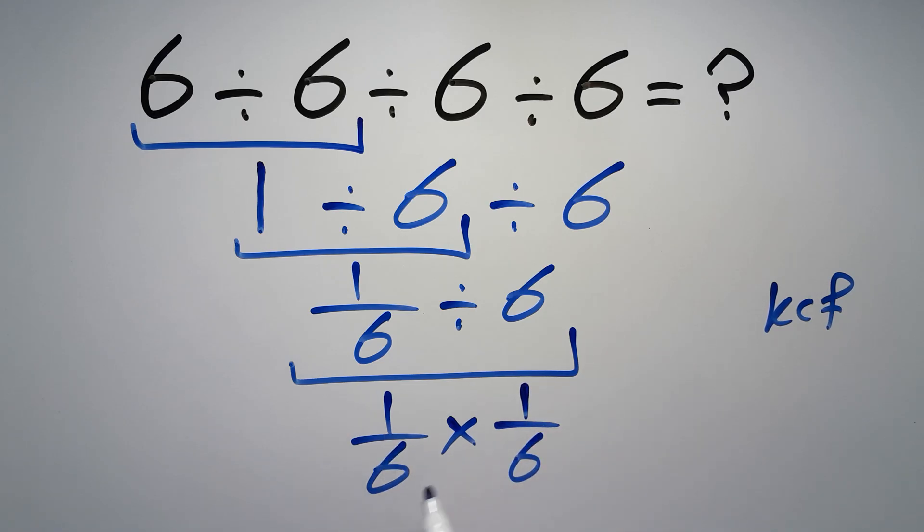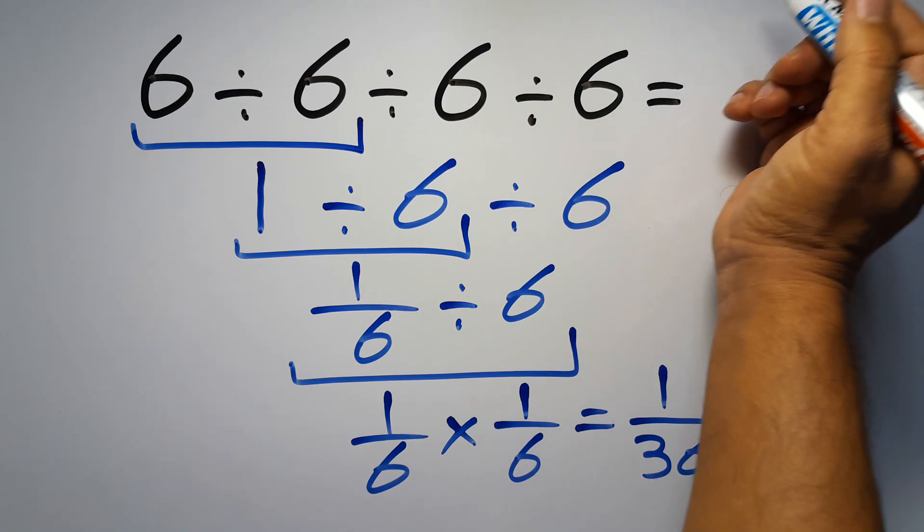So we have 1 over 6 times 1 over 6, which equals 1 times 1 equals 1, and 6 times 6 equals 36, so 1 over 36. And this is our final answer to this problem.